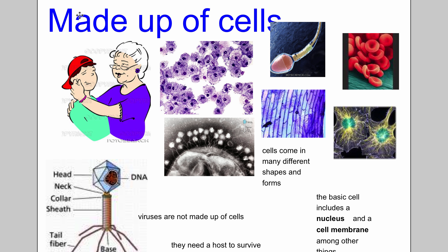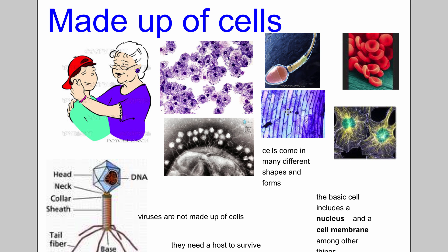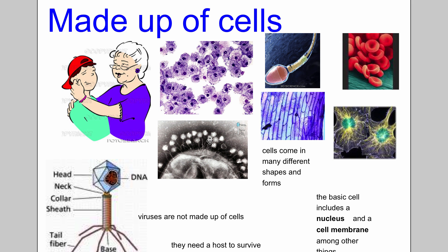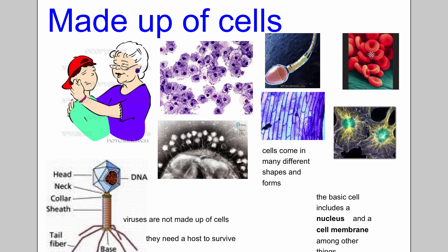The first characteristic is: made up of cells. Things that are living — at least most scientists agree — if something is made up of cells, then we think it's probably alive. Cells are the smallest units of life. Here you can see a bunch of pictures: that's a sperm cell, plant cells, red blood cells, nerve cells, and skin cells.